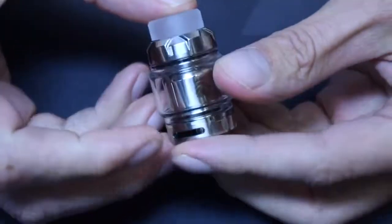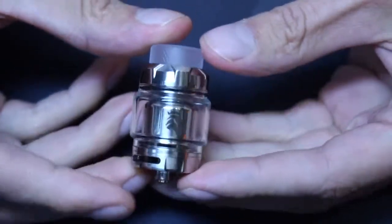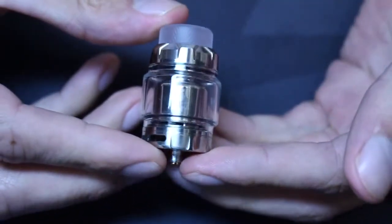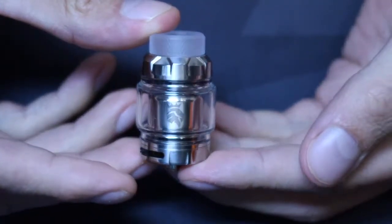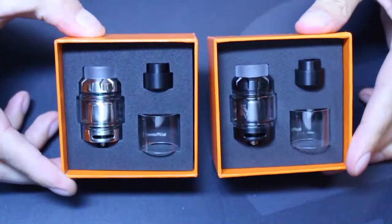So let's talk about it. It's 24mm in diameter, 46mm tall. It's a bottom airflow tank. It holds 3ml or 5ml e-juice, made with 304 stainless steel, has a clamp coil system, and it comes in two colors: black and silver.